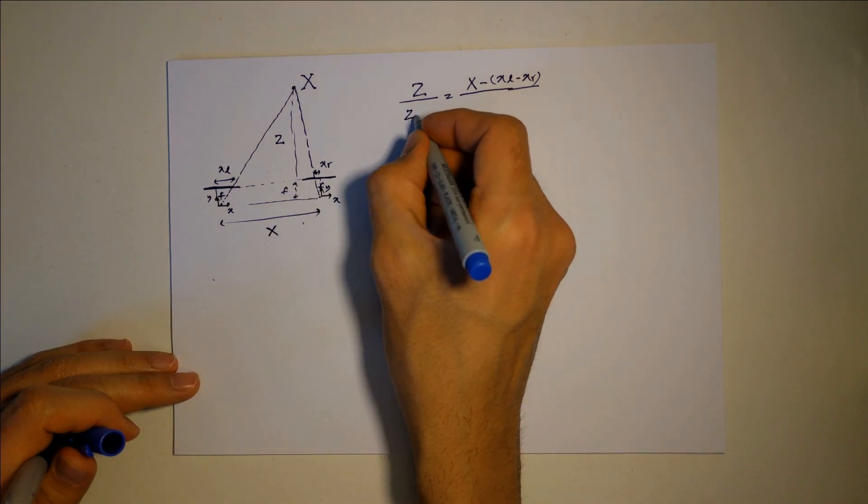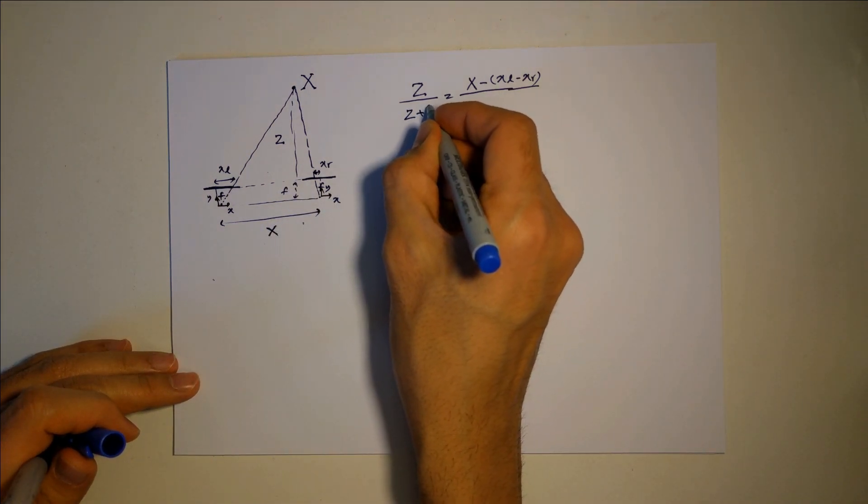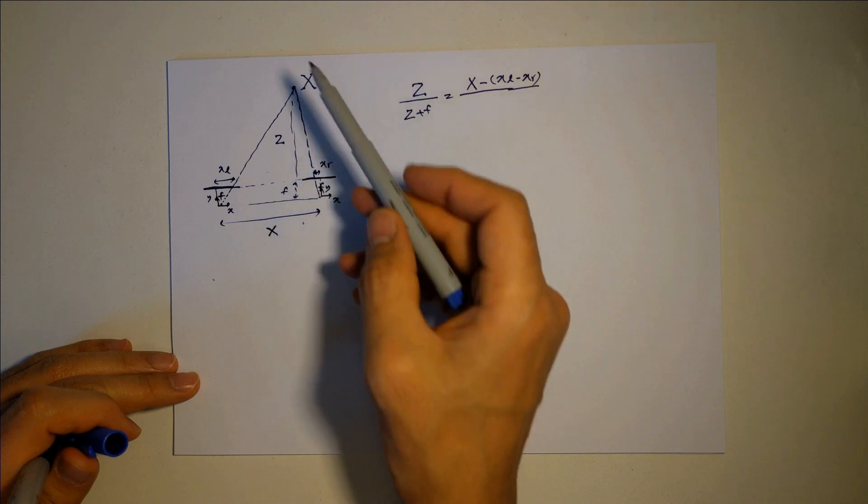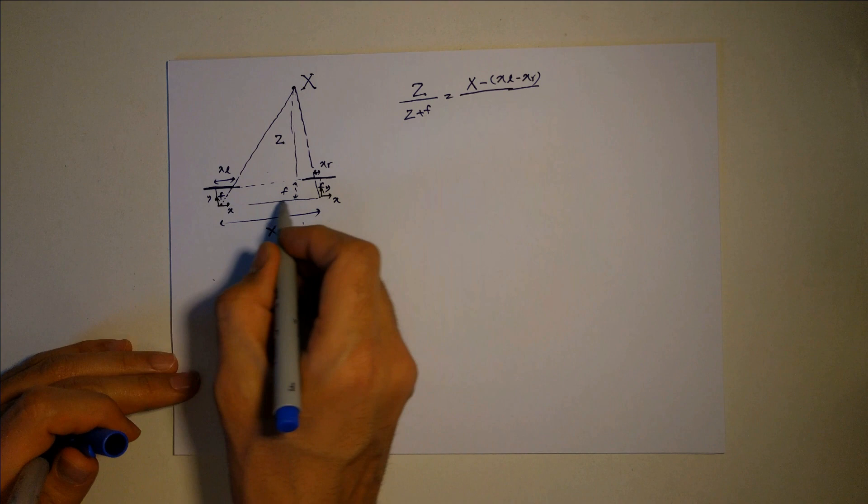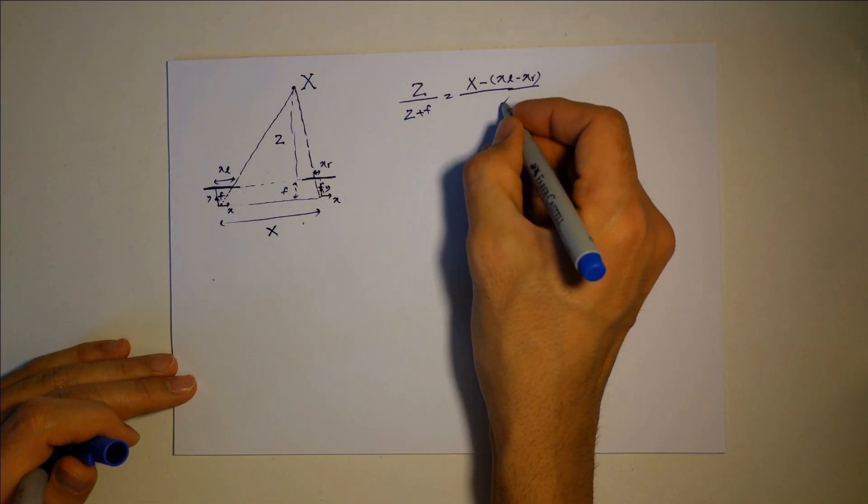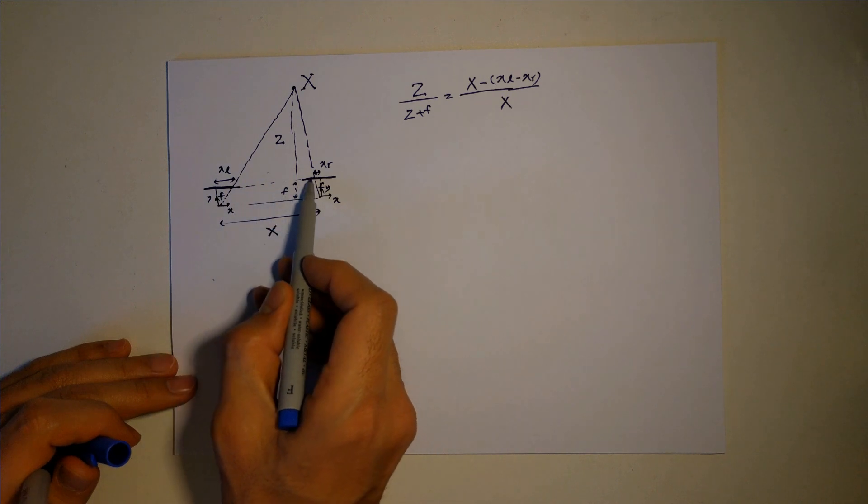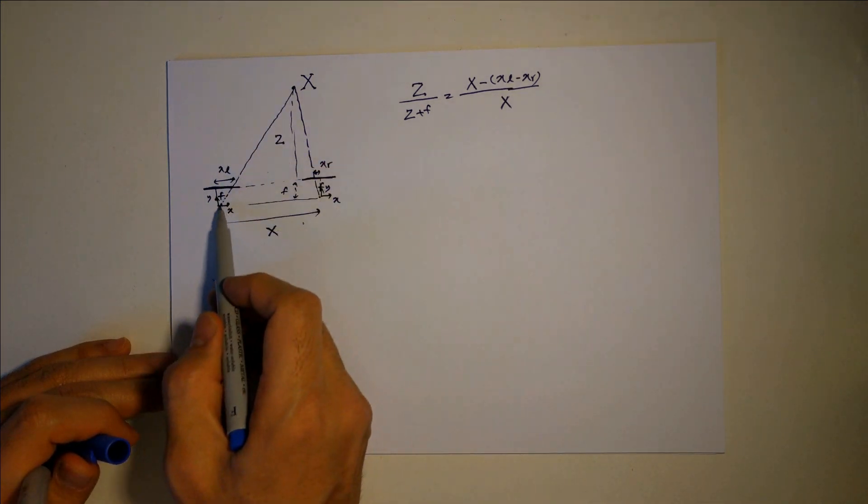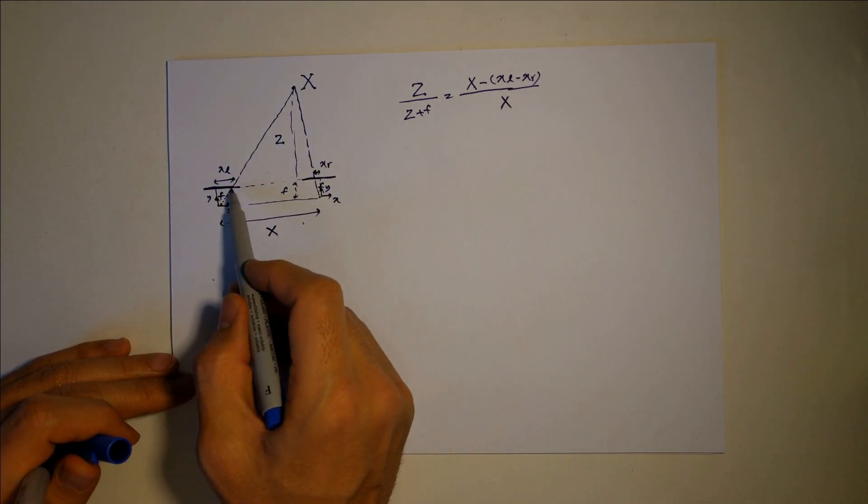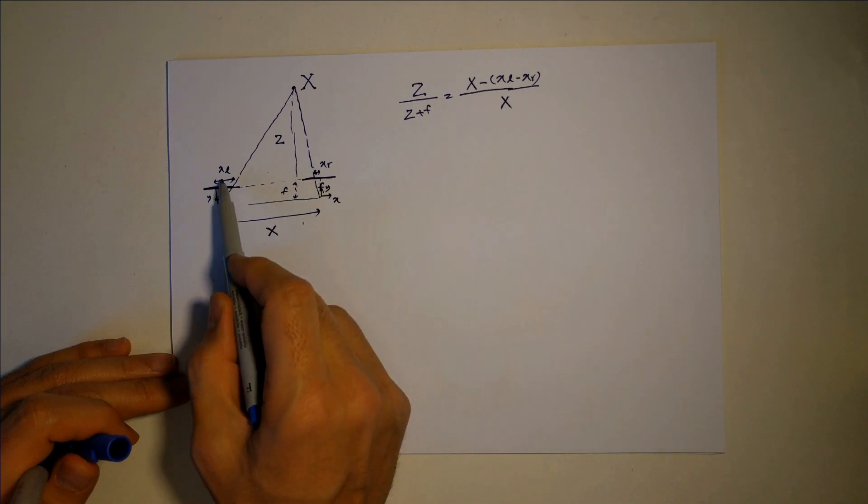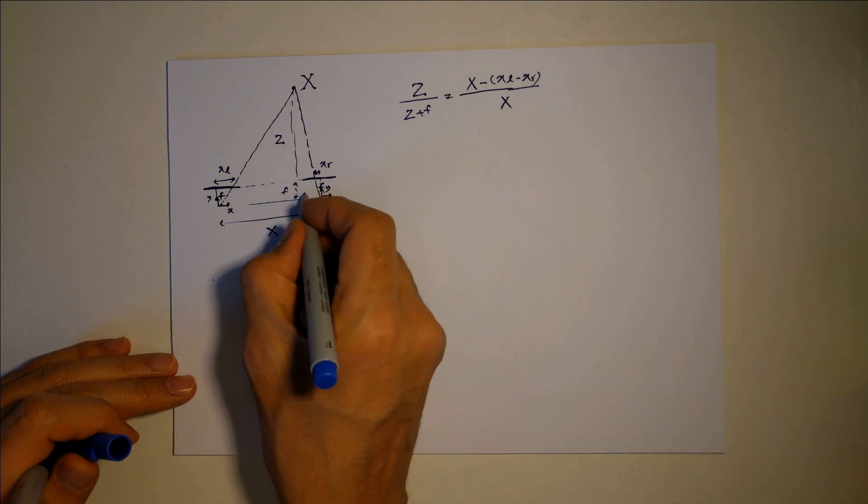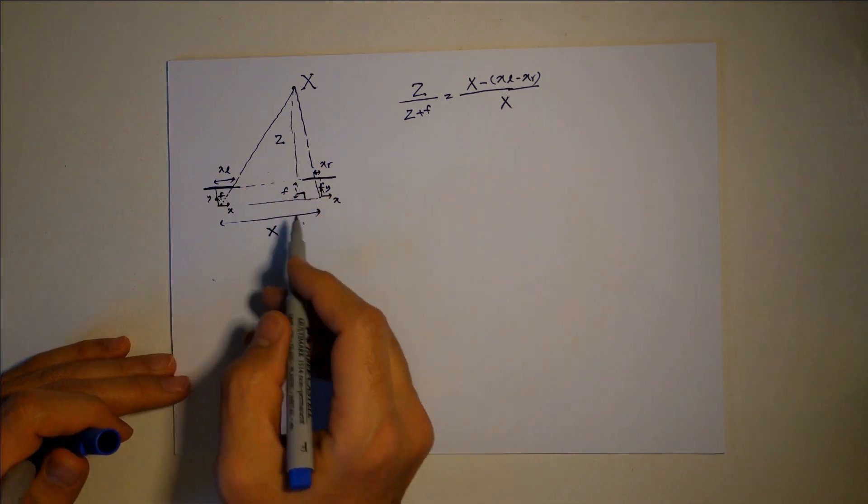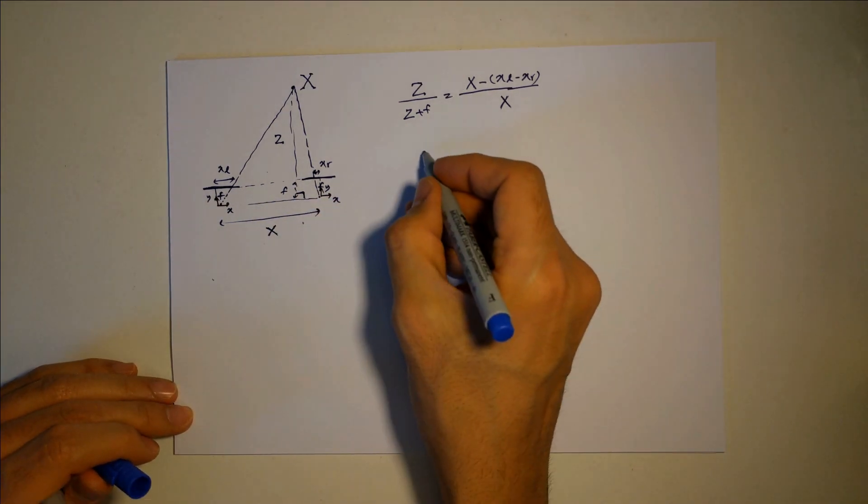Z plus F, this big triangle, over X. So this small triangle here, and this big triangle, Z over this distance, which is X minus these two, over Z plus F over X. So we can simply find Z.